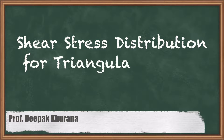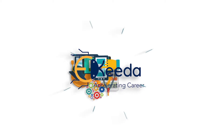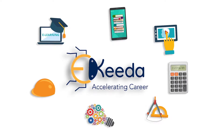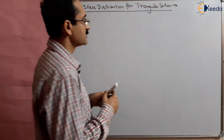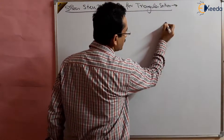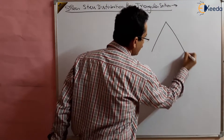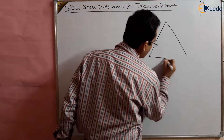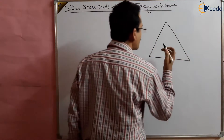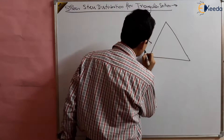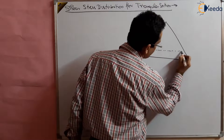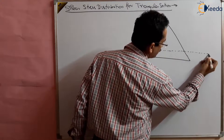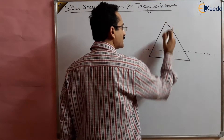Hello students. In this session we are going to study the shear stress distribution for a triangular section. We have a triangular section and we want to find out the shear stress distribution for it, including drawing the shear force diagram above and below the neutral axis. The neutral axis lies at a distance of H/3 from the base or 2H/3 from the apex.